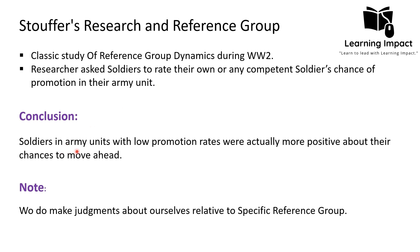The research concluded that soldiers in army units with a low promotion rate were more optimistic about their chances, because their reference group — other soldiers in the same low-promotion-rate unit — also lacked capabilities. However, soldiers in units with a high promotion rate, surrounded by high achievers, were more pessimistic about their own promotion, because the strong reference group made them evaluate themselves more harshly.